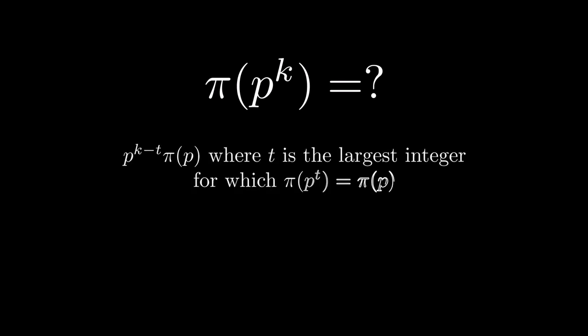So now we only need to know the Pisano periods of numbers that are powers of primes. Luckily, Donald Wall had a more complicated formula, this one, for pi of a power of a prime, given pi of the prime itself.